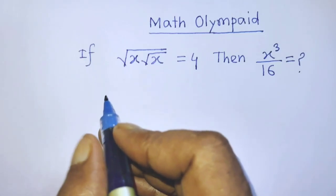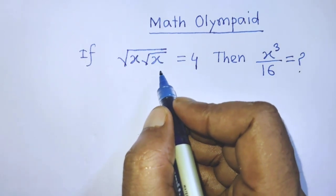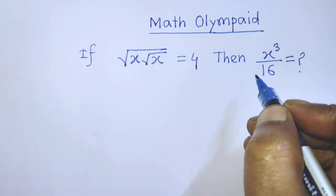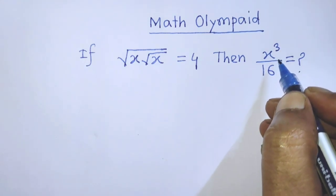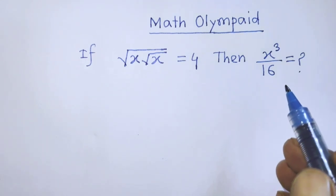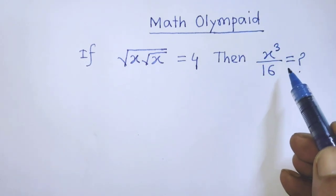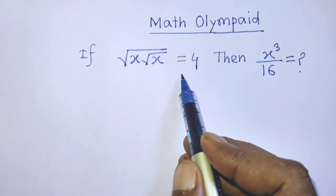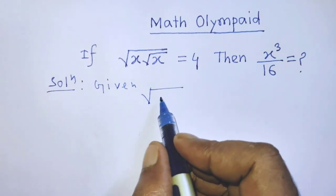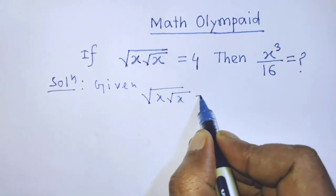Hello guys, you are welcome to solve this math problem. If square root of x times square root of x is equal to 4, then find the value of x to the power 3 over 16. Today I am telling you how to find the value of this exponential form from this equation. Our given equation is square root of x times square root of x is equal to 4.